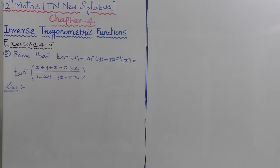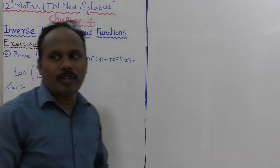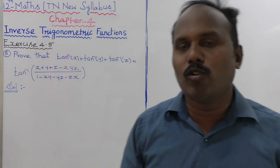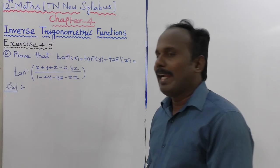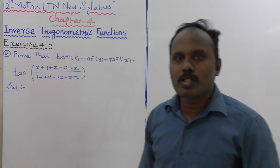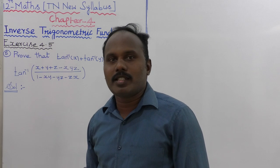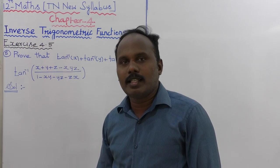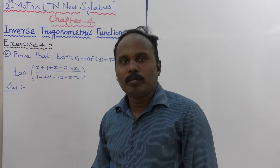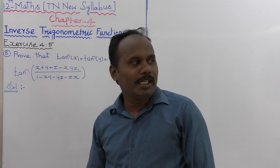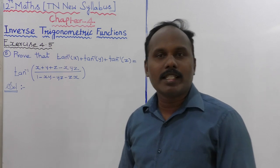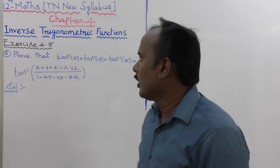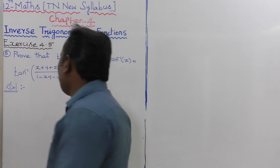Fifth sum: prove that tan inverse of x plus tan inverse of y plus tan inverse of z is equal to tan inverse of x plus y plus z minus xyz, the whole divided by 1 minus xy minus yz minus zx. That is the proof, and this is very easy.